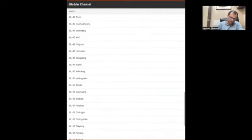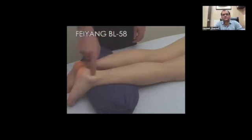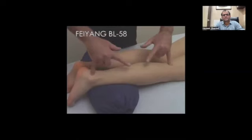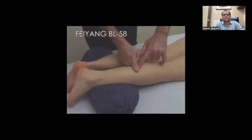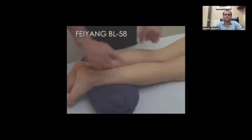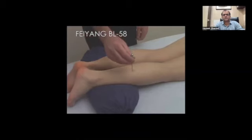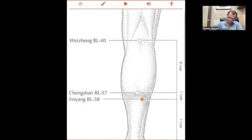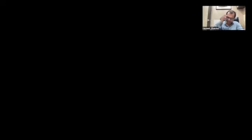Urinary bladder 58 is very very important point. You can see in this image. This is the location of urinary bladder 58. It is 7 tsun up from the ankle joint. From the ankle where urinary bladder 60 point is, if you go 7 tsun up, then you are finding urinary bladder 58. This point is very good for the severe pain of piles. Even you can do the acupressure, person will feel relaxed.